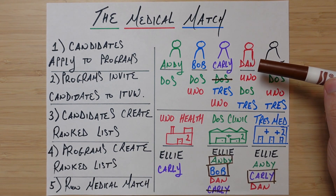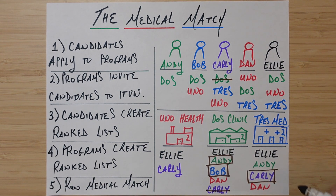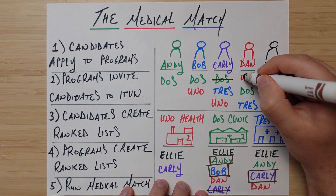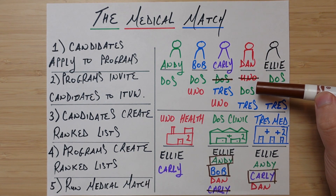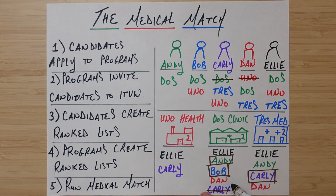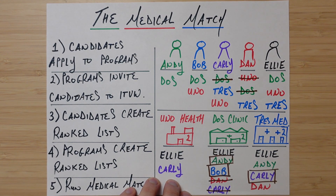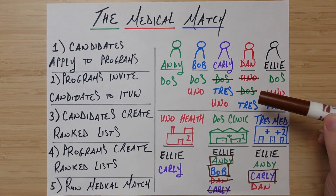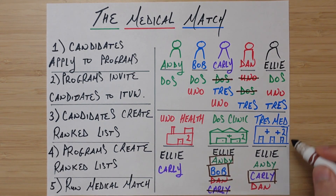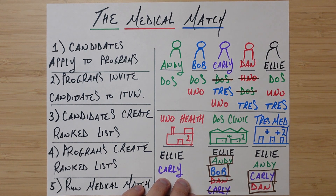Now we go to Dan. Dan says he wants to go to Uno Health, but Dan's not listed at Uno Health, so he cannot go there. We go to Dan's next preference — Dose Clinic. Same logic as Carly: there are two preferred candidates already, so Dan will not go to Dose Clinic. We cross that off from both sides. Dan only has one more choice — Trace Medical. Dan is listed there, there are two spots and only one is taken, so Dan is temporarily matched at Trace Medical.